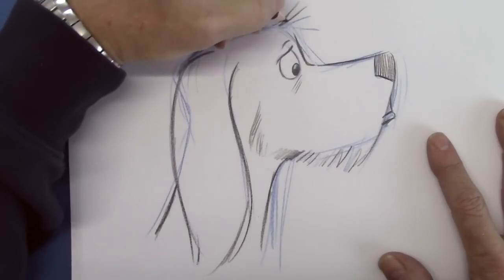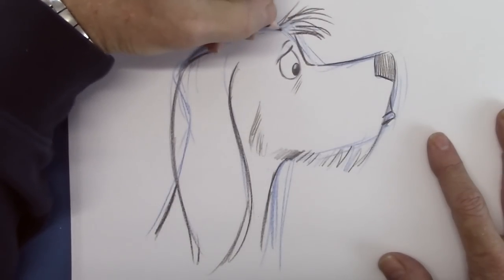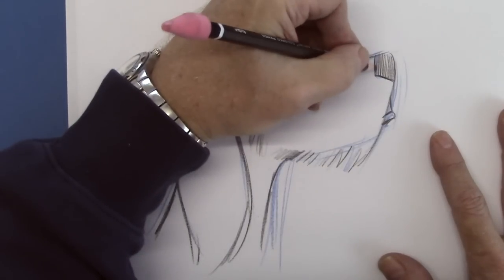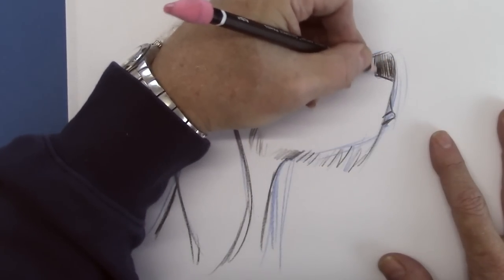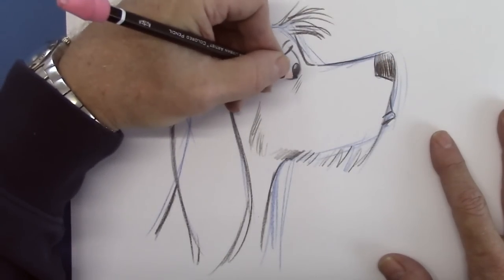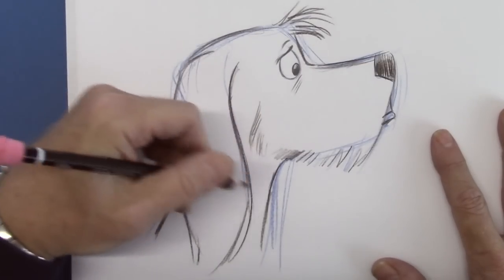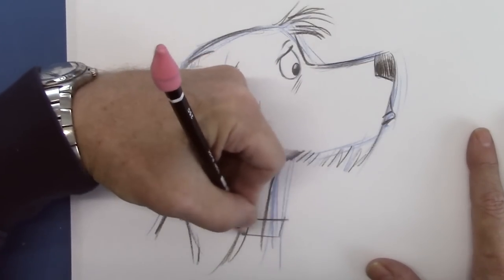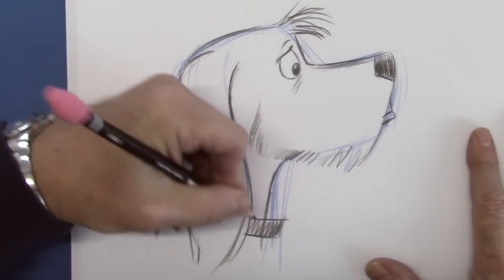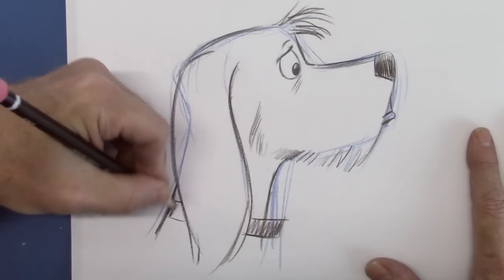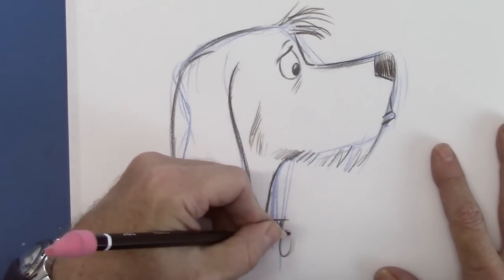And a little bit of fur on top, kind of flopping over, giving it a casual look. Let me just darken that nose in a little bit. And just add a little bit of shading to the bridge of the nose. What do you say we give him a collar, huh? We'll float the medallion.